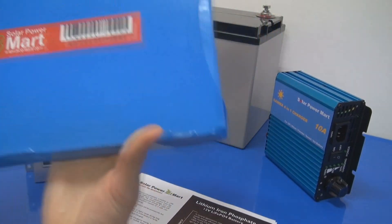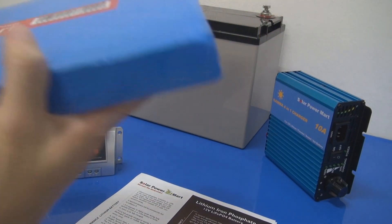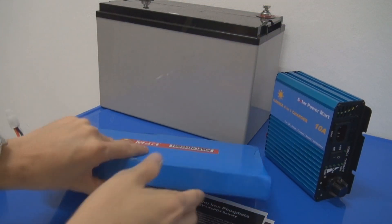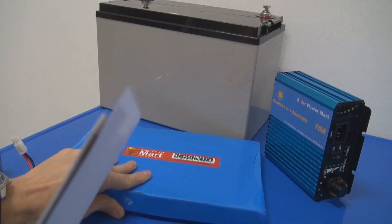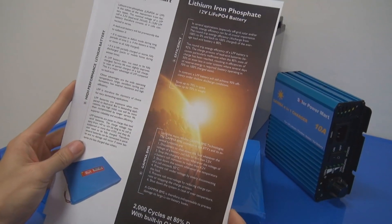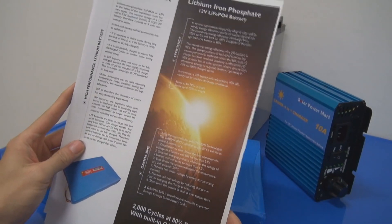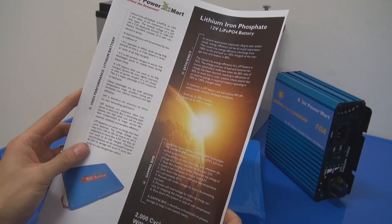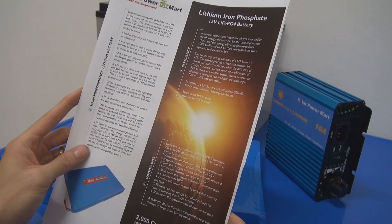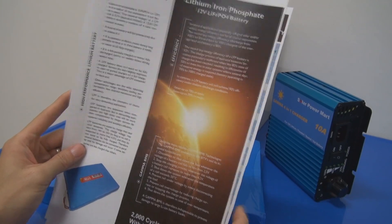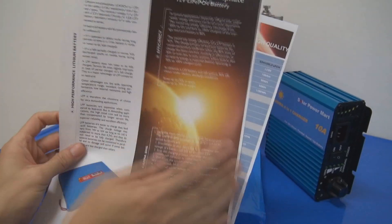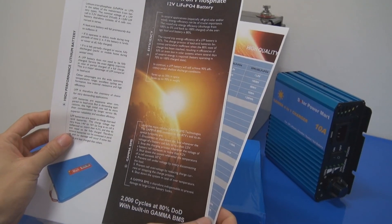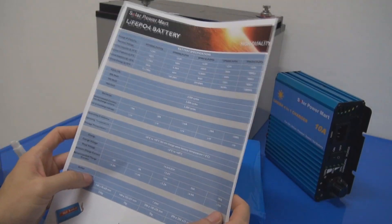This is the 30 AH lithium battery. You can also download the datasheet from our website on the lithium battery. In our datasheet we call it LFP, lithium iron phosphate. You can read about why this battery is now the best battery for solar applications.